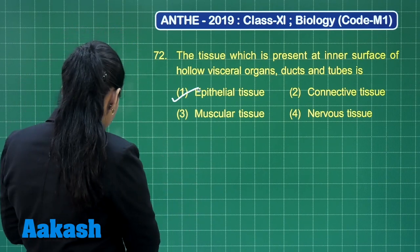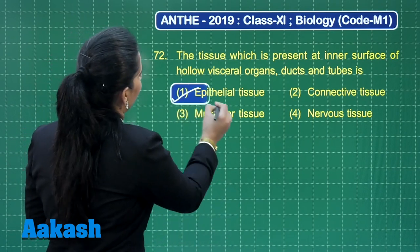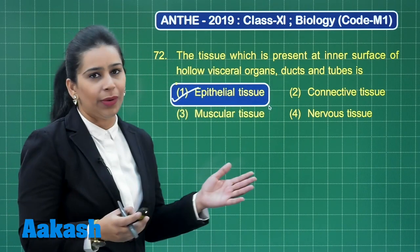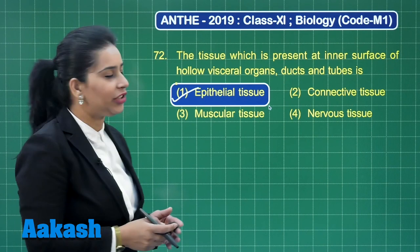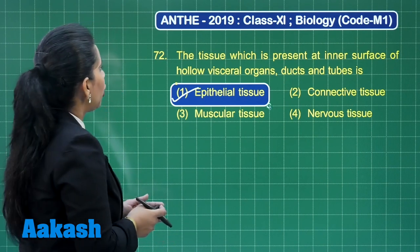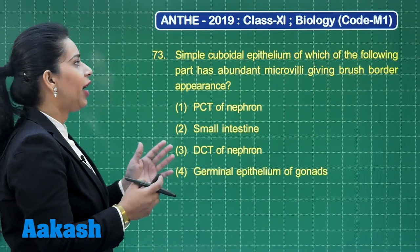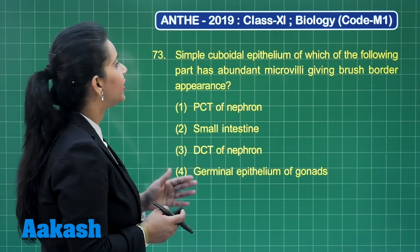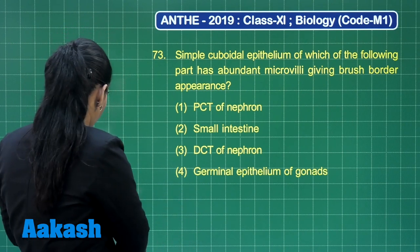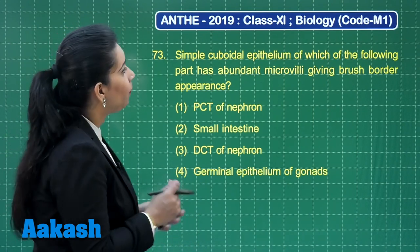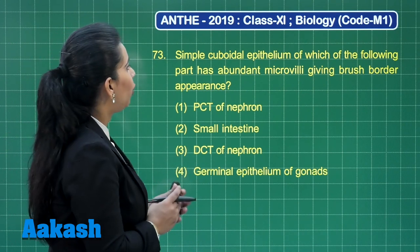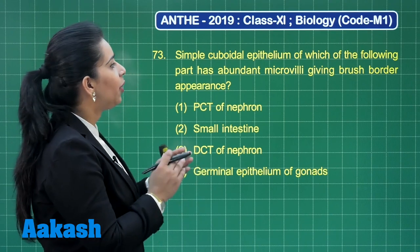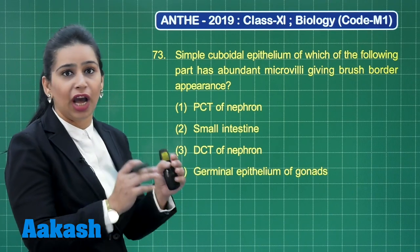So the correct answer to this question is epithelial tissue. Now let us see another question — question number 73, again a question from animal tissue: simple cuboidal epithelium of which of the following parts has abundant microvilli giving a brush border appearance?